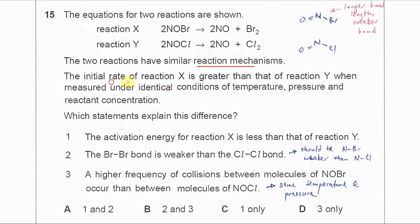The initial rate of X is greater, which means it's easier to form the products from the reactants. The reason is the NBr bond is longer than the NCl bond. When the bond is longer, the bond will be weaker. So the NBr bond is weaker and easy to break.